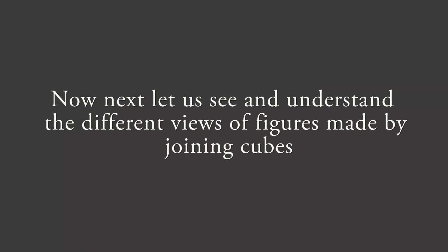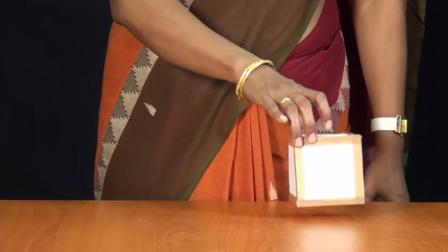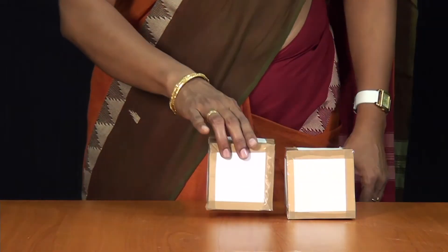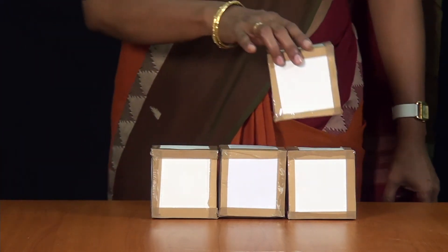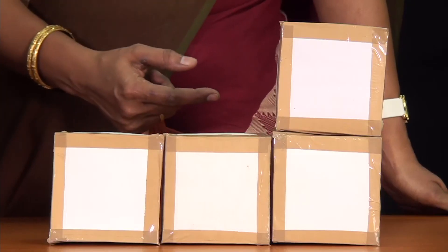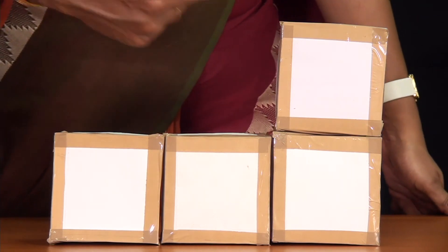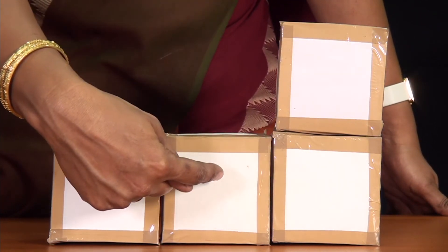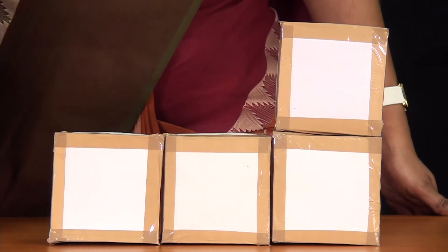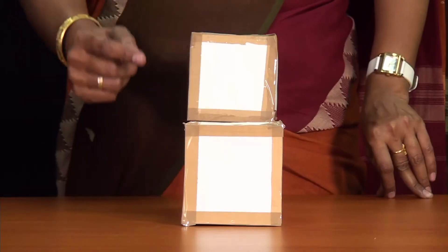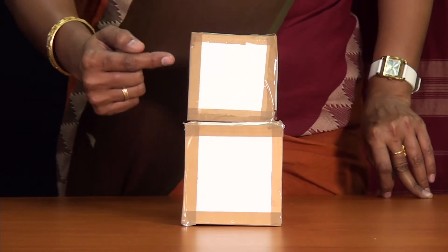Now next, let us see and understand the different views of figures made by joining cubes. Let us arrange the cubes in the form of a solid. When we look at the object from the front, there are four squares seen. Moving on to the side view, this shows just two squares.